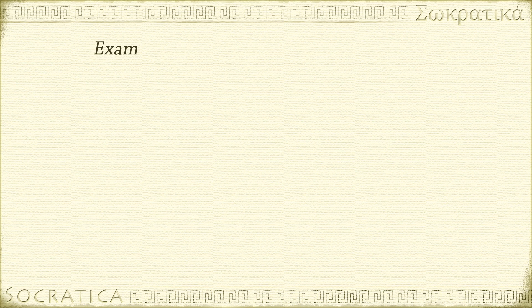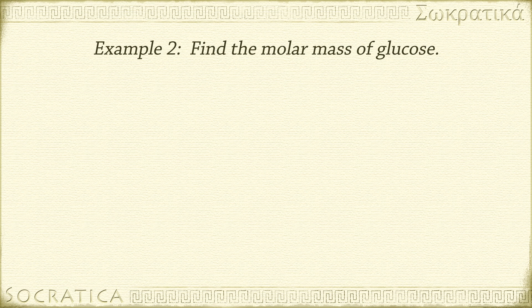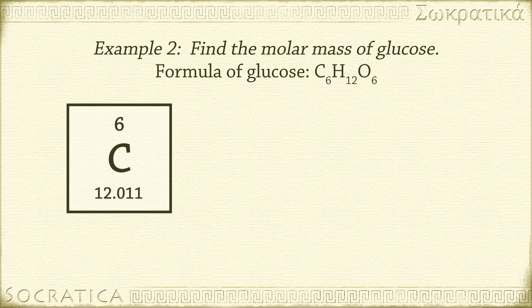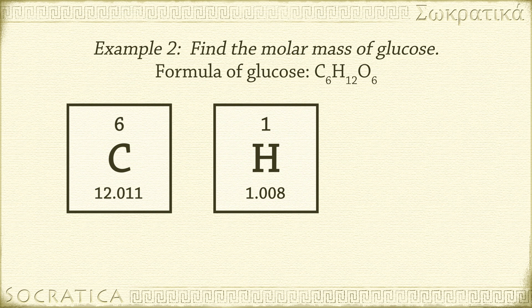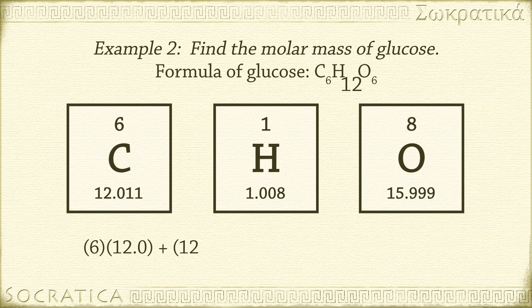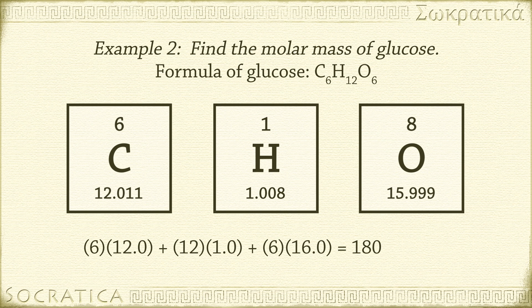Let's do another example that is similar. What's the molar mass of glucose? The formula for glucose is C₆H₁₂O₆. Look on the periodic table to find the gram atomic masses for all of the atoms in this molecule. Carbon is 12.0 grams per mole, hydrogen is 1.0 grams per mole, and oxygen is 16.0 grams per mole. Multiply by the number of each atom like so: 6 × 12.0 plus 12 × 1.0 plus 6 × 16.0 equals 180.0 grams per mole. That's the molar mass of glucose, or you may hear it called the gram molecular mass.